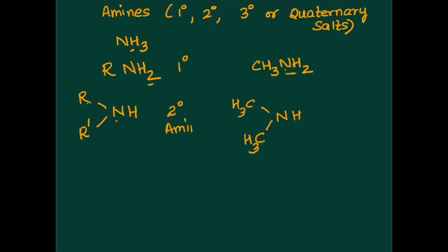It is a derivative of ammonia. What about tertiary? There are 3 alkyl groups — R, R, R — attached to the nitrogen, making this a 3 degree amine. And in all these structures, please do not forget the lone pair of electrons at each point. Don't forget that nitrogen is carrying a lone pair of electrons in each of these molecules.